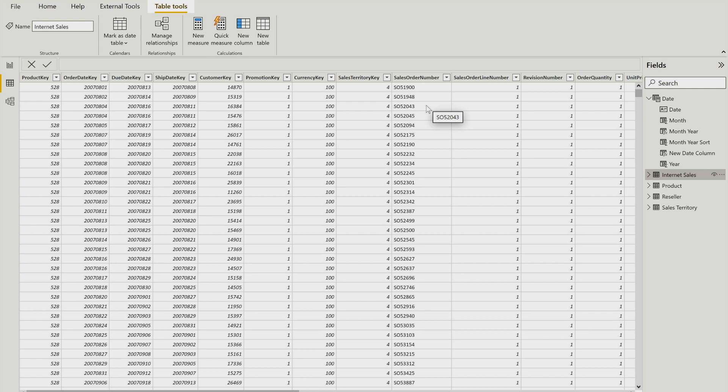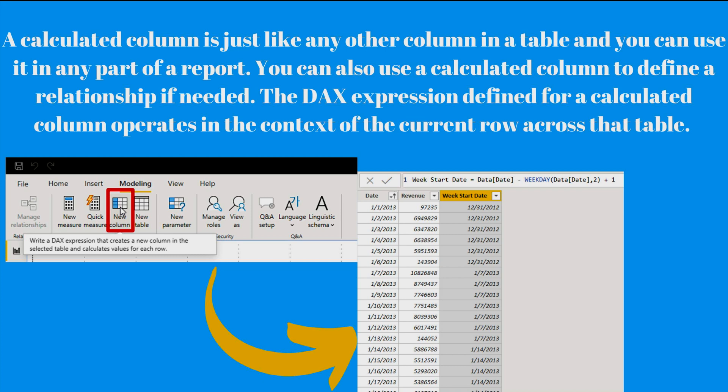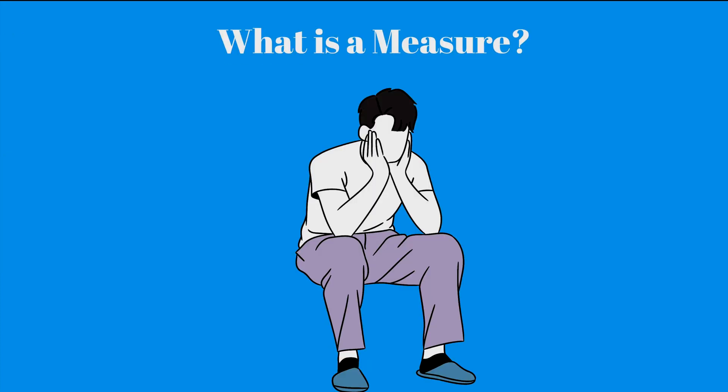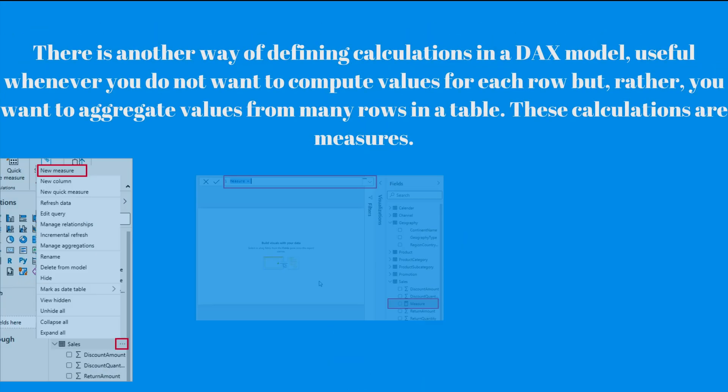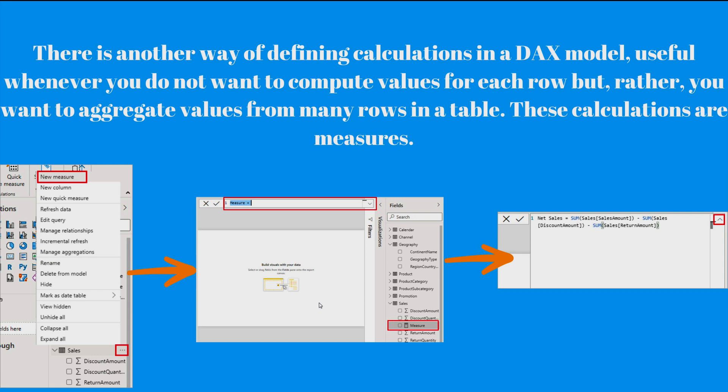Next we are going to discuss about a measure. Another question comes: what is a measure? Well, there is another way of defining calculation in a DAX model which are useful whenever you do not want to compute values for each row but rather you want to aggregate values from many rows in a table. These calculations are known as your measures.